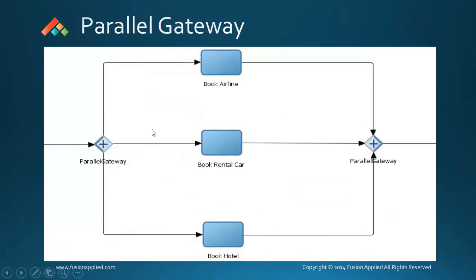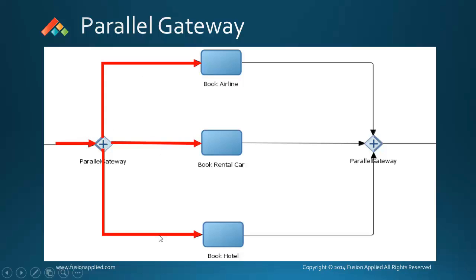Just like the inclusive gateway, the parallel gateway is also a split-merge gateway. The difference is that the outgoing sequence flows do not have conditions defined on them, and the process token just gets split across all the outgoing sequence flows.